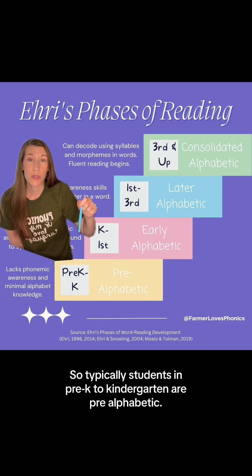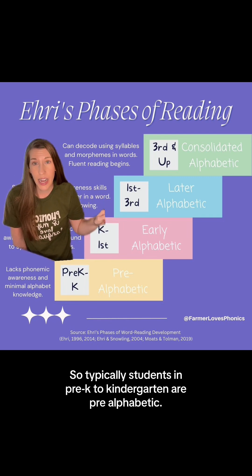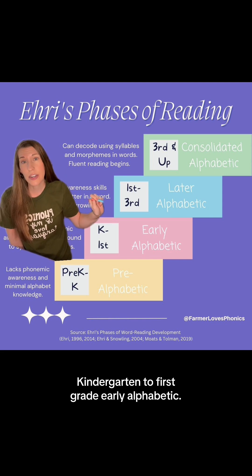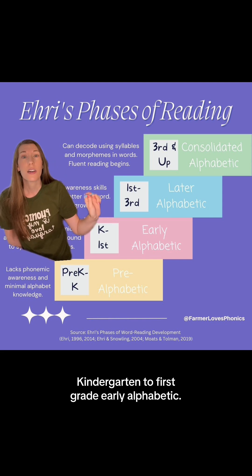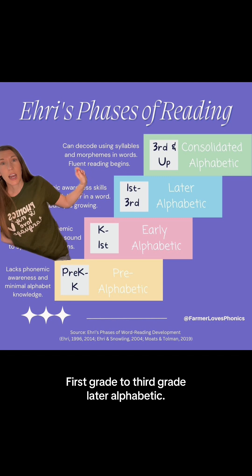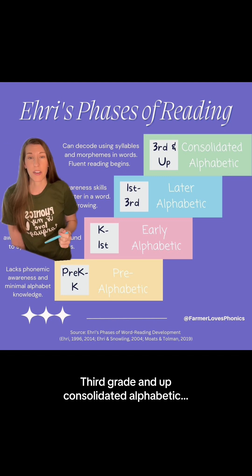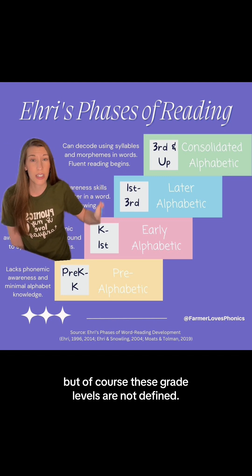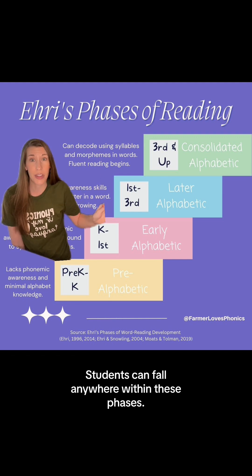Typically, students in pre-K to kindergarten are pre-alphabetic. Kindergarten to first grade is early alphabetic. First grade to third grade is later alphabetic. Third grade and up is consolidated alphabetic. But of course, these grade levels are not defined — students can fall anywhere within these phases.